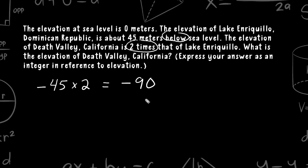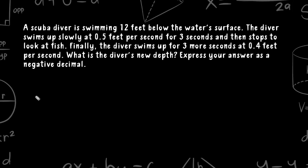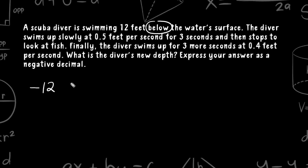Let's go ahead and solve the next problem. This problem reads that a scuba diver is swimming 12 feet below the water's surface. We start by writing negative 12, because the word 'below' indicates a negative position relative to the water's surface.